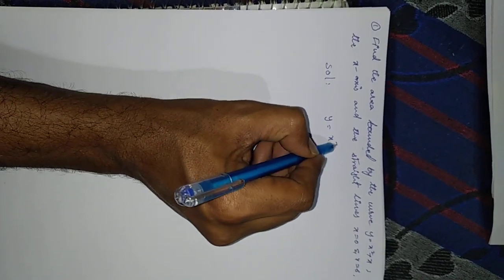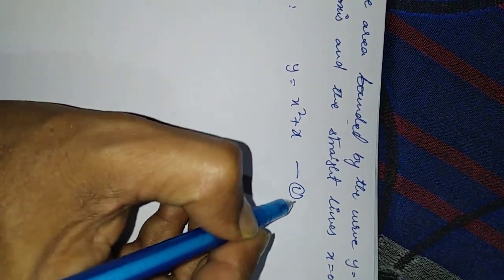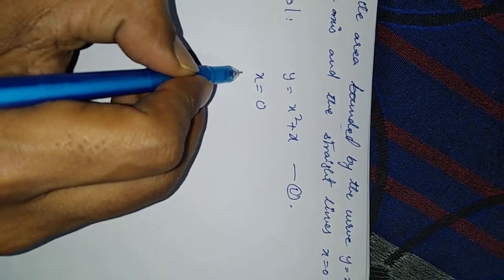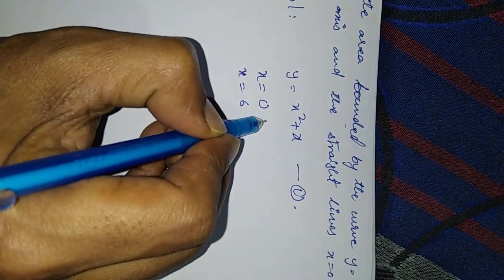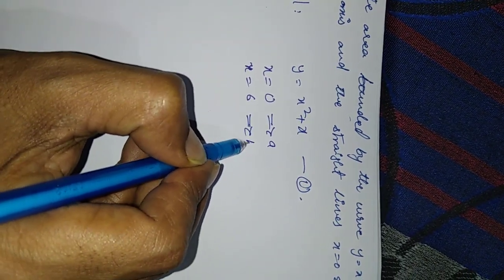Solution: y equals x squared plus x. This is equation number 1. For the x-axis, x equals 0 and x equals 6. We are assuming this is a and this is b.